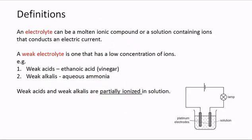Now we need to familiarize ourselves with certain definitions. An electrolyte can be a molten ionic compound or a solution containing ions that conduct an electric current. With respect to electrolytes, we have a weak electrolyte and a strong electrolyte. A weak electrolyte is one that has a low concentration of ions present.